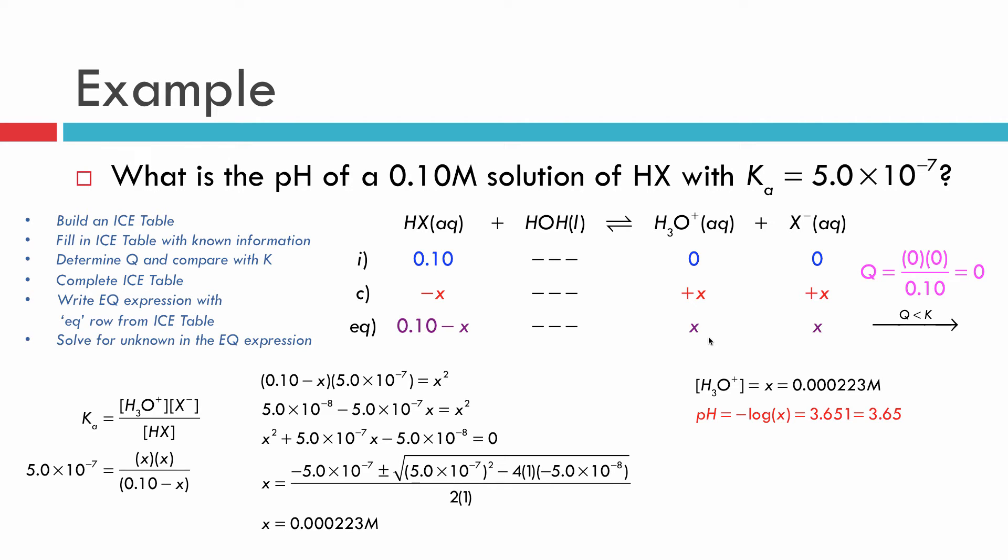I want you to notice something, though. Now that I've done that, what if I go back and I look at this value right here, 0.10 minus x. Let's actually do the math. If we take 0.10 minus x and we round it to necessary sig figs or anywhere even close, this rounds up to 0.10. In other words, x is so small that it's not even affecting the size of our initial concentration of HX.